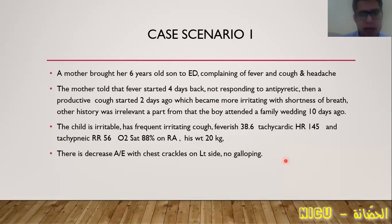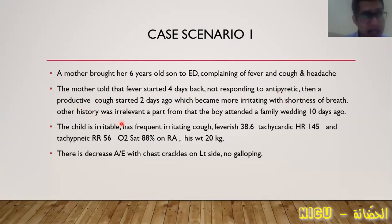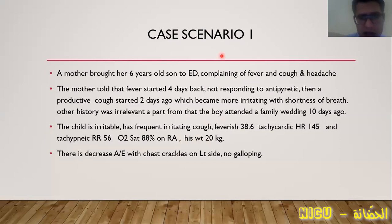In the first scenario, a mother brought her six-year-old son to the emergency department. The boy complained of fever, cough, and headache. Fever started four days ago not responding to antibiotics, then a productive cough started after two days, becoming more irritating with shortness of breath. He attended a family wedding 10 days ago. On examination, the child was irritable with frequent retreating cough, feverish, tachycardic, tachypneic, and desaturating with oxygen saturation 88% on room air. His weight was 20 kg. Auscultation revealed decreased air entry and fine crackles mainly on the left side with no gallop.